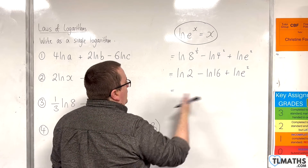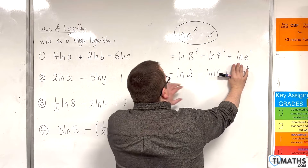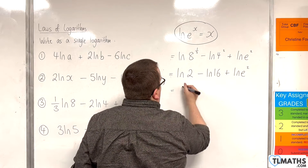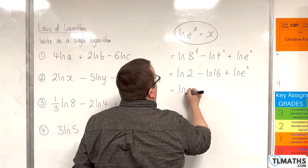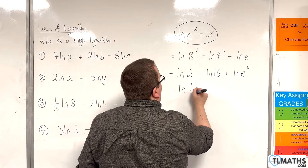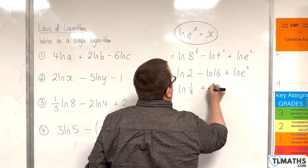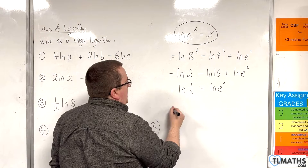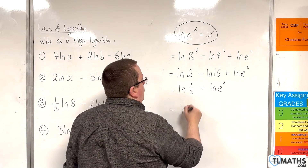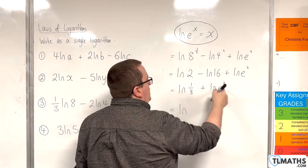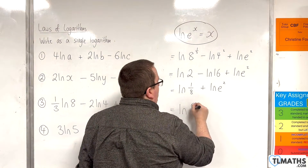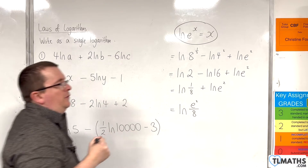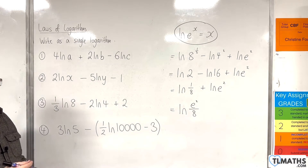Working from left to right, we use the quotient rule first: the natural log of 2 over 16 is the natural log of 1 over 8. Then using the product rule with the natural log of e squared, we get the natural log of 1 eighth times e squared, which is e squared over 8.